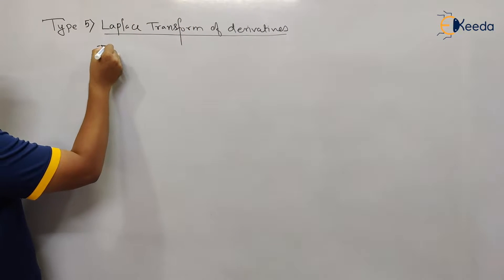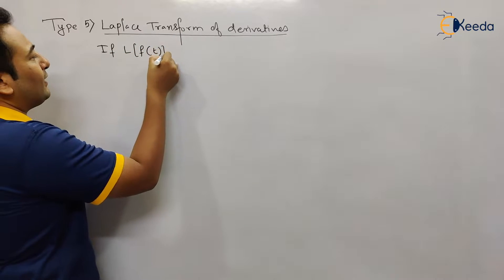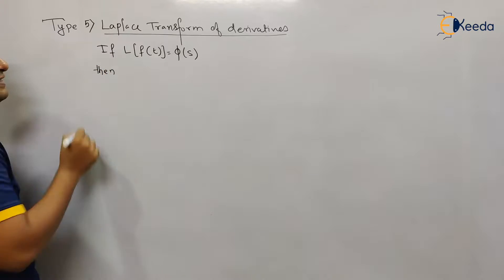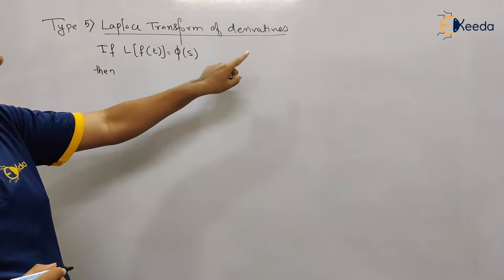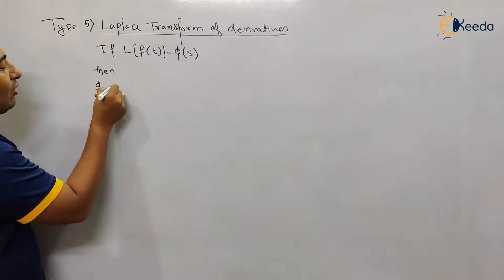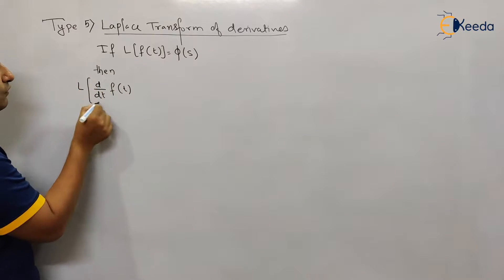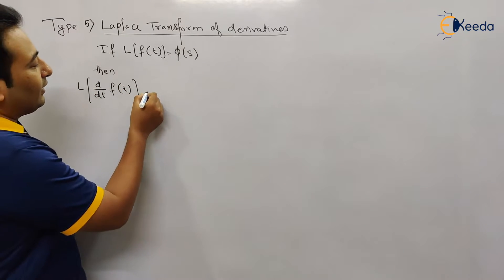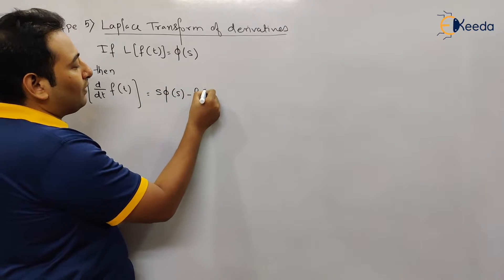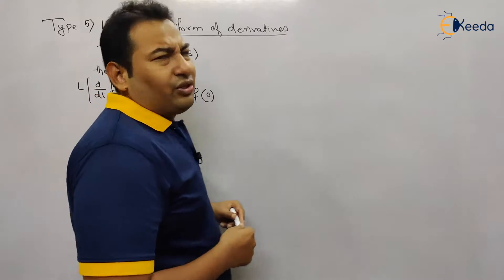Let's start. First of all, always start with: if Laplace of f(t) is equal to φ(s), then this property — Laplace Transform of Derivatives — says: if we have d/dt of f(t) and we need to find the Laplace of this term, then it will be s·φ(s) minus f(0). That is the property.